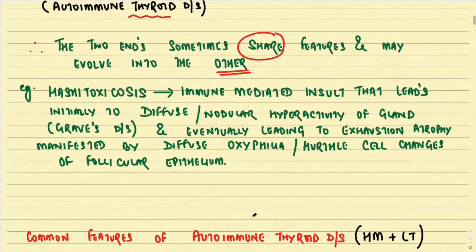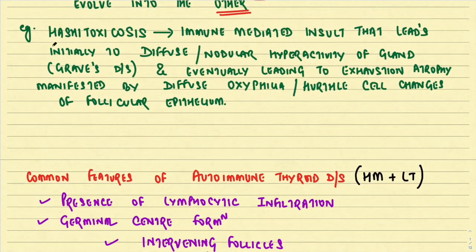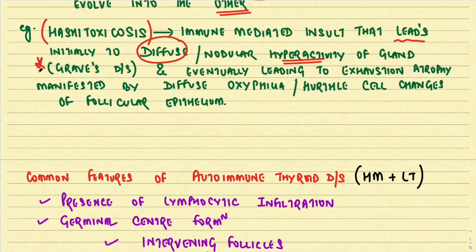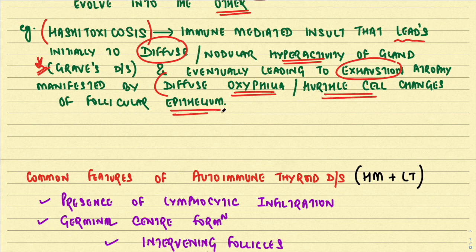An important example of this overlap is called Hashitoxicosis. It is an immune-mediated insult to the thyroid follicular cells that will initially lead to diffuse nodular hyperactivity of the gland — initially Graves' disease — and eventually lead to exhaustion atrophy manifested by diffuse oxyphilia or Hurthle cell change of the follicular epithelium.